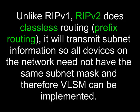Unlike RIP version 1, RIP version 2 does classless routing, or prefix routing. It will transmit subnet information so all devices on the network need not have the same subnet mask, and therefore VLSM can be implemented.